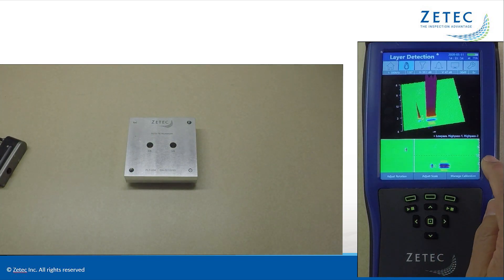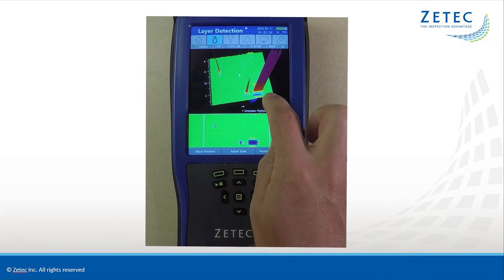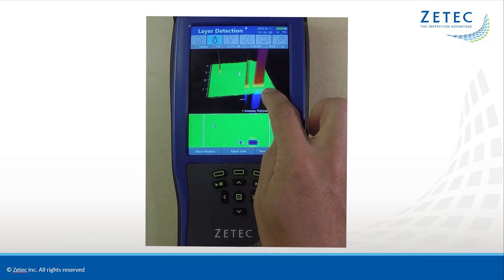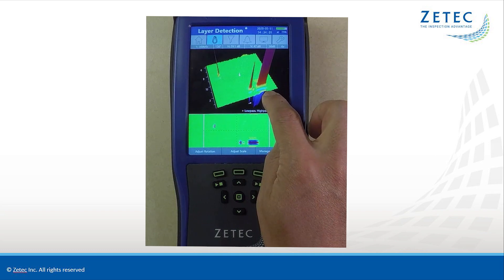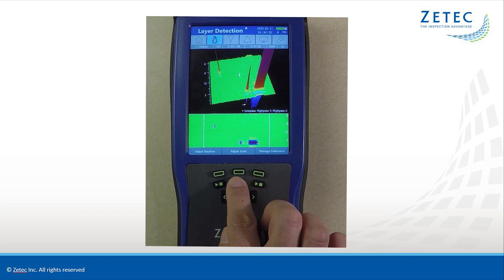The color C-scan display clearly shows the flaws and raises the probability of detection. It also reveals the different layers of the hole so you can easily determine which layer the flaw is located. There are no extra encoders or special equipment required.